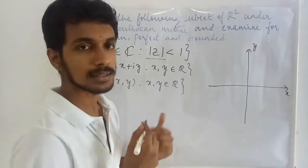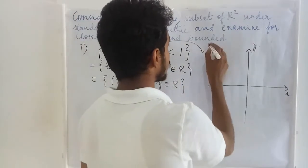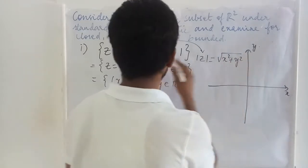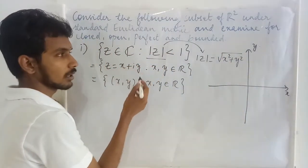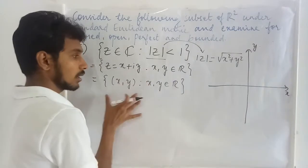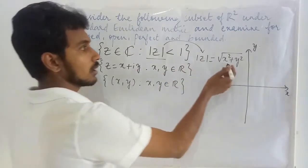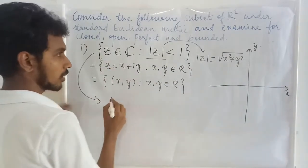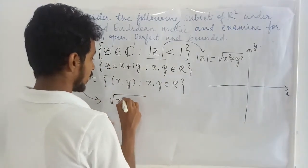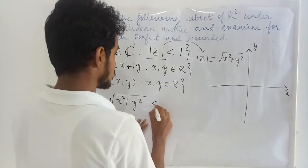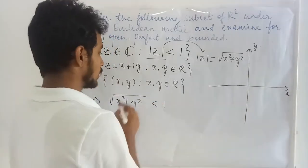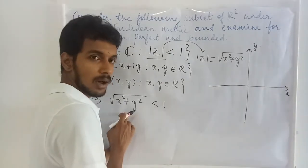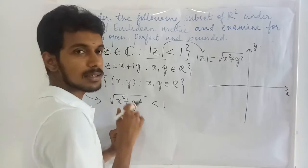It is given that the absolute value of z is less than 1. The absolute value of z is nothing but the square root of x² + y² whenever you write z as x + iy. Therefore, applying this condition, what we get is x² + y² less than 1. From this we can see that this is a circle with radius 1 and origin as the center.